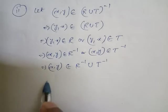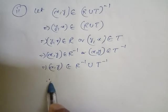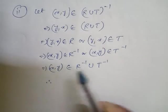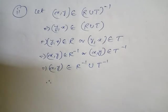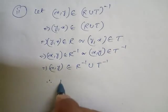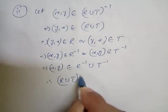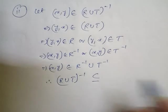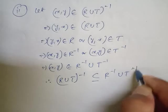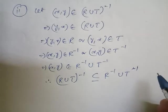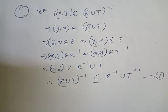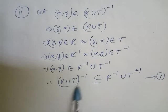x comma y belongs to R inverse and x comma y belongs to T inverse, which means both these elements belong to R inverse union T inverse. We can say that R union T whole inverse is a subset of R inverse union T inverse. Take this as equation number one.